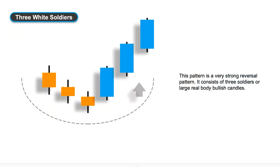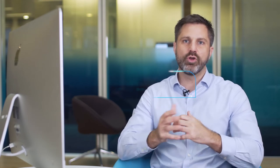The next pattern is what we call the three white soldiers, a great trend-changing formation. We see a downward trend and then three big strong bullish candles appearing straight afterwards. This suggests that the momentum on the selling side has disappeared and the buyers have come back into the marketplace. With three strong signals we're looking at a complete change in trend — a really good opportunity to recognise that although it looked like a downward market, the buyers have returned and we can see a potential long-term uptrend.